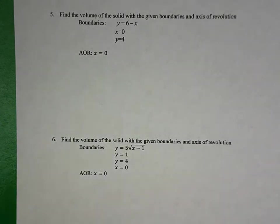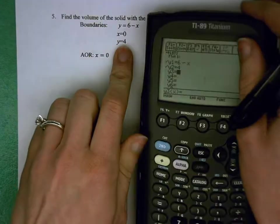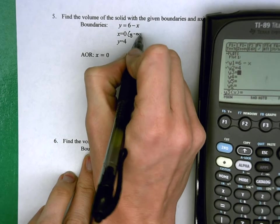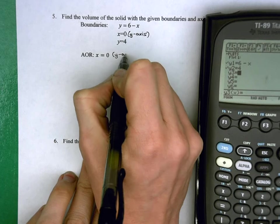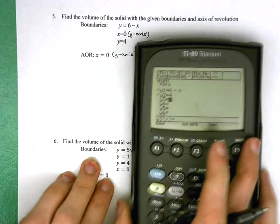We start the same as Friday with our boundaries here: y equals 6 minus x, x equals 0, y equals 4. x equals 0 is our y-axis, and it also happens to be our axis of revolution, our AOR.